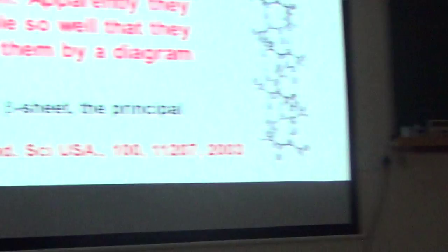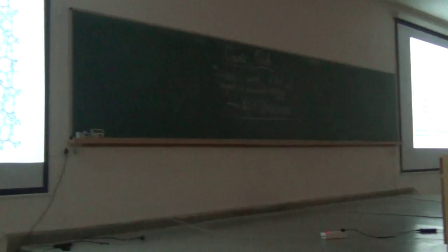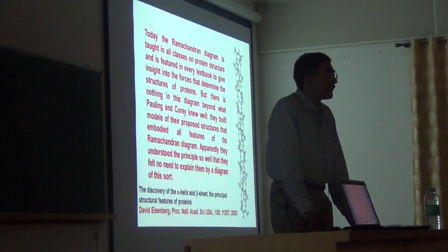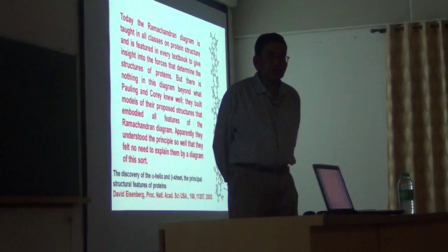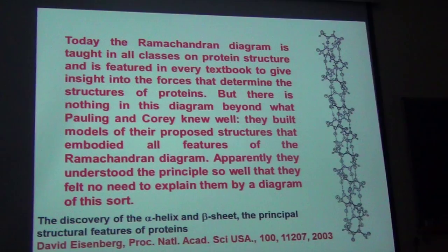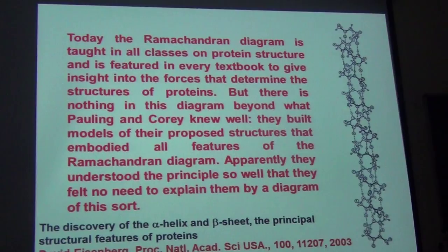One of the reasons I prepared this talk was in the year 2003, the Proceedings International Academy of Sciences celebrated the 50th anniversary of the recognition by Linus Pauling of the alpha helix and other kinds of secondary structures in proteins. A commentary was written by David Eisenberg, a very prominent crystallographer of the United States and a PhD student of Pauling, and he wrote this: 'Today the Ramachandran diagram is taught in all classes on protein structure and is featured in every textbook to give insight into the forces that determine the structures of proteins. But there is nothing in this diagram beyond what Pauling and Corey knew well.'